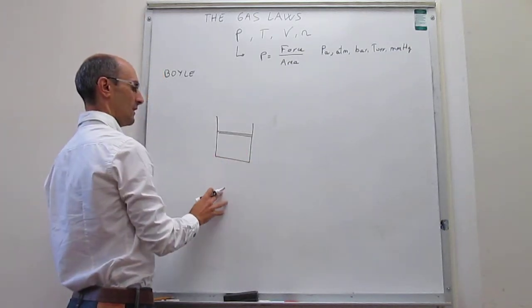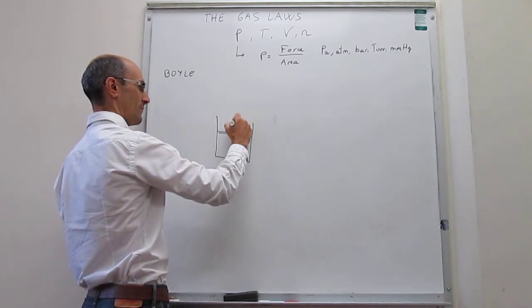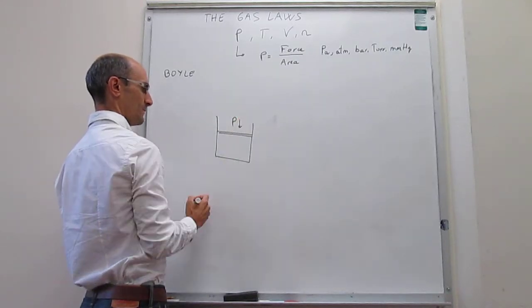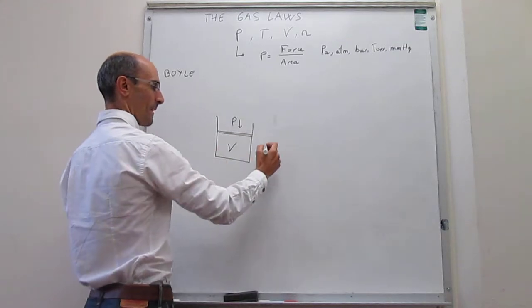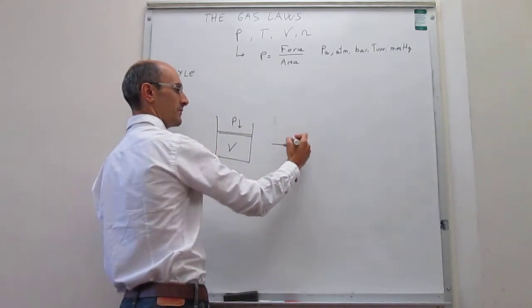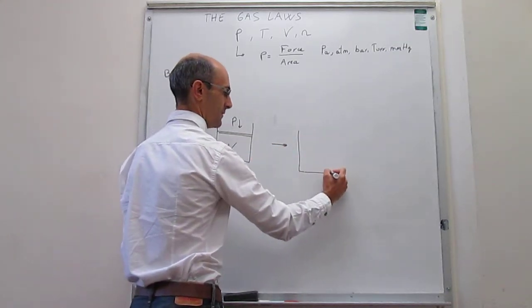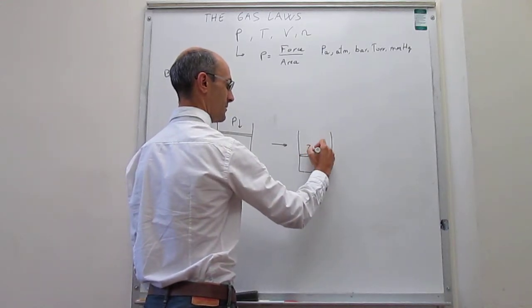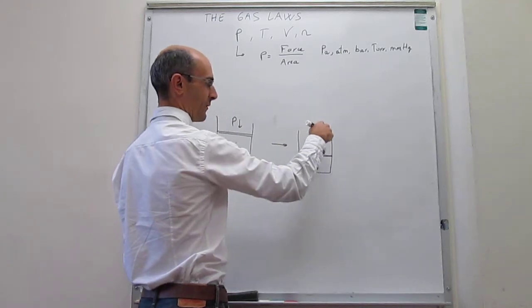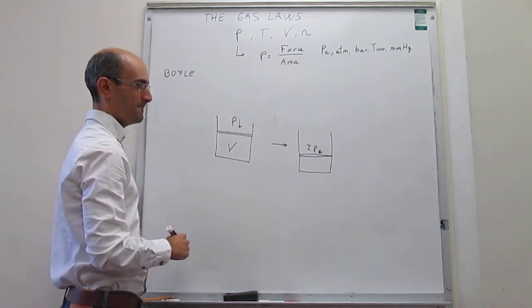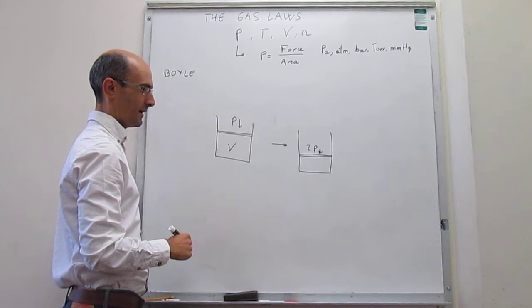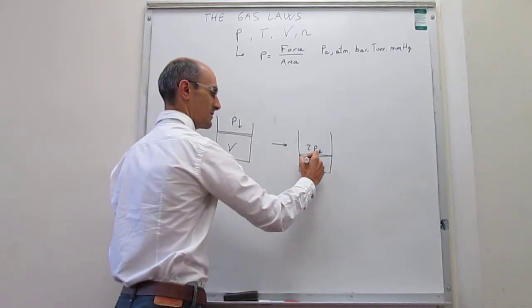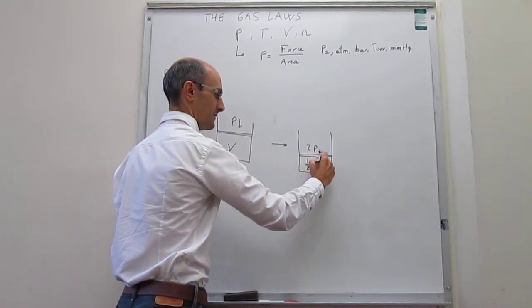And the idea is that what Boyle found out is that if you apply some pressure on a gas, and you have some volume, the game that you can play here is you can double the pressure, for example, and see what happens to the volume. Okay, so you increase the pressure applied on this, maybe by putting a weight or by doing some other sort of pressure increase. And it turns out that the volume halves.